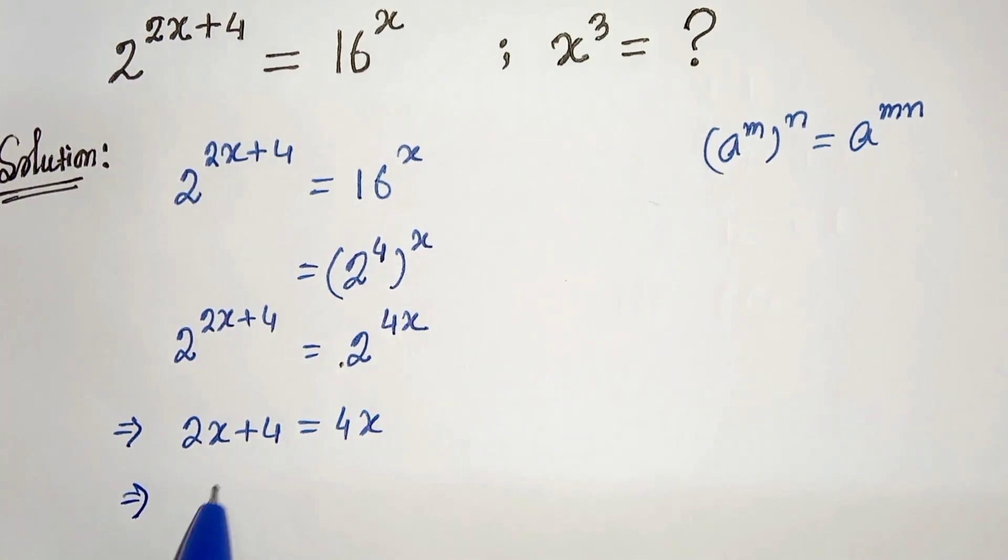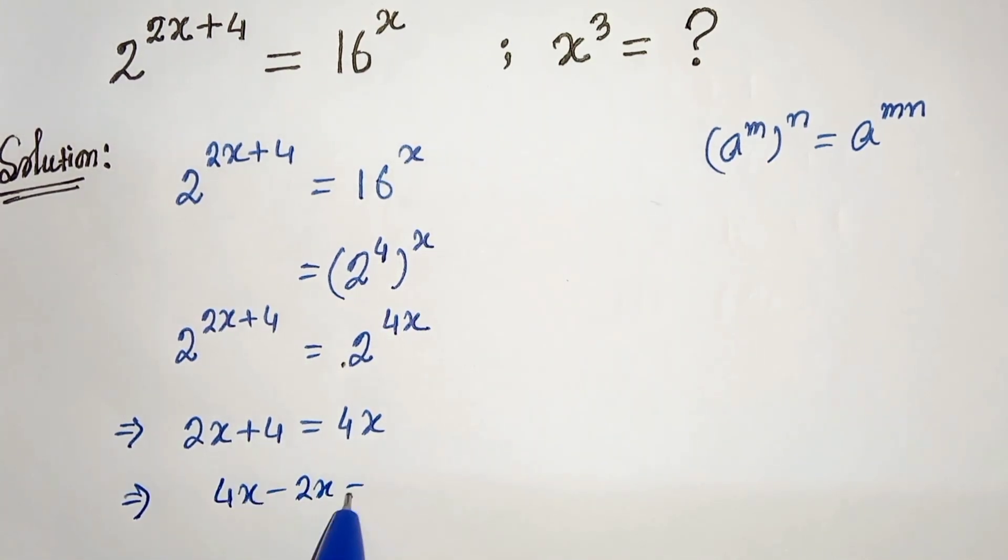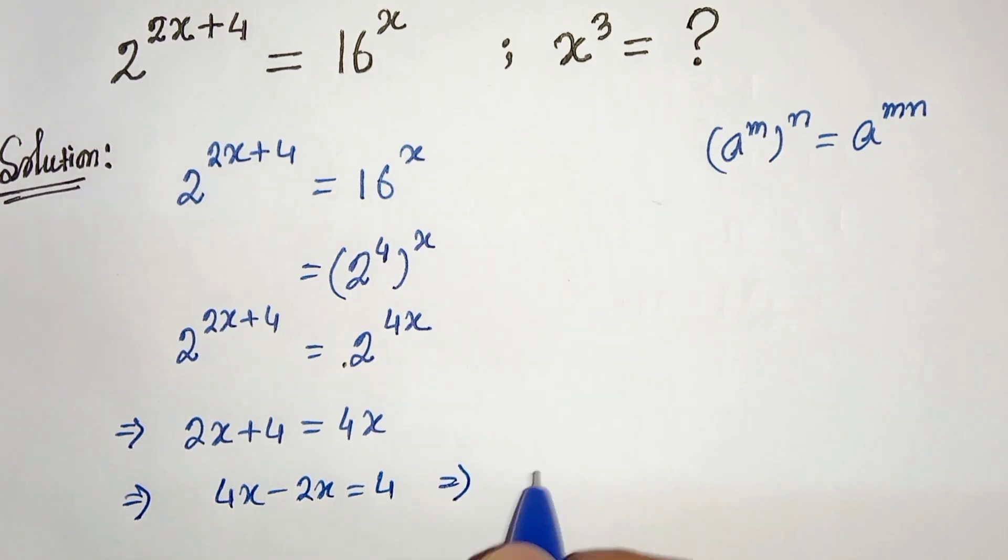In the next step we can write 4x minus 2x is equals to 4 and so 2x is equals to 4. Therefore x will be 2.